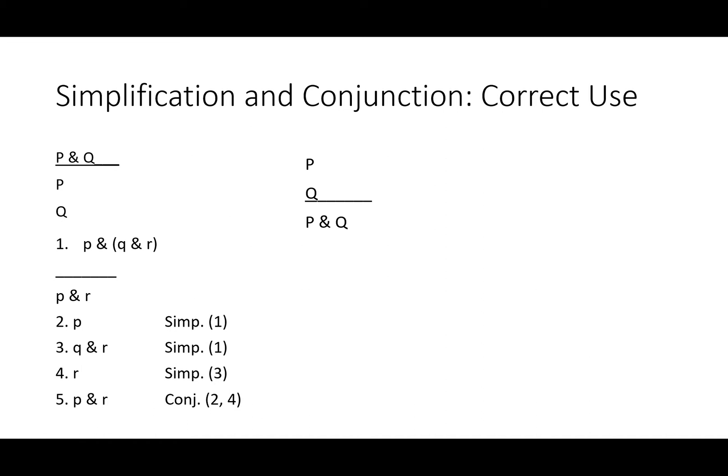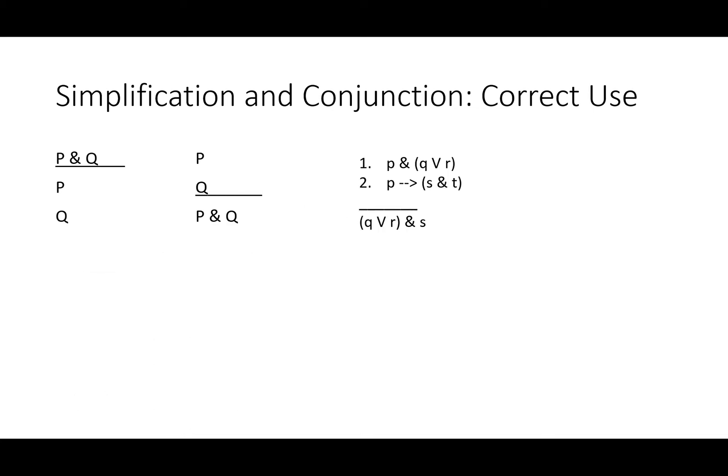Here's a more complicated argument that will also make use of these rules. Premise 1: P and either Q or R. Premise 2: if P then S and T. Therefore either Q or R and S. First, simplify line 1 and we'll get P, then we'll get Q or R. We'll need both of those. Then we'll do a modus ponens using lines 2 and 3 to get S and T. Then we'll simplify S. We don't need T for the conclusion so we'll leave it. Finally, we'll conjoin lines 4 and 6 to get our conclusion.